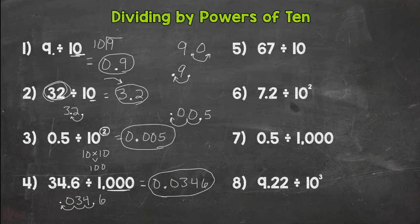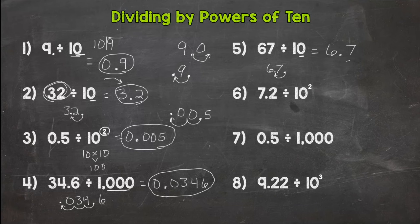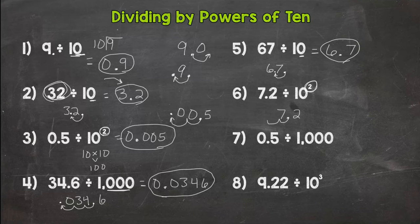Number 5: our power of 10 is 10, which has one zero, so move the decimal point one time. It's a whole number, so the decimal comes after. Moving it one time, it goes between the 6 and the 7. So the answer is 6 and 7 tenths. Number 6: 10 squared, or 10 to the second power, which means 10 times 10, which is 100. We look at our exponent — that says move the decimal twice. Moving it 1, 2 times to the left, fill with placeholder zeros, and we get 72 thousandths.